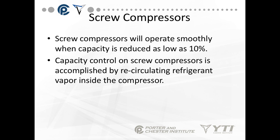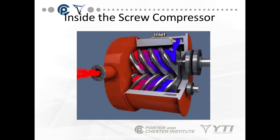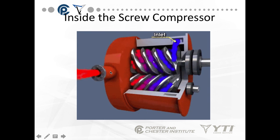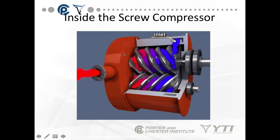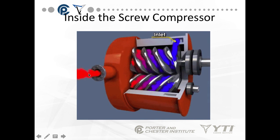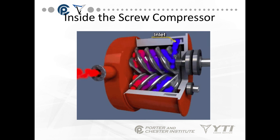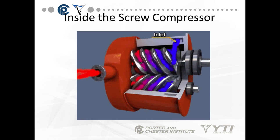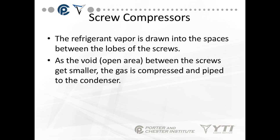Screw compressors operate smoothly even when capacity is reduced as low as 10%. I can reduce the flow of refrigerant or reduce the speed of the compressor and lower capacity to about 10%, ramping up and down depending on demand. Capacity control on screw compressors is accomplished by recirculating refrigerant vapor inside the compressor — taking some discharge vapor and allowing it to come back into the inlet. More recently, we can also control capacity with variable-speed motors. The refrigerant vapor is drawn into the spaces between the lobes of the screw; as the void gets smaller, the gas is compressed and piped to the condenser.